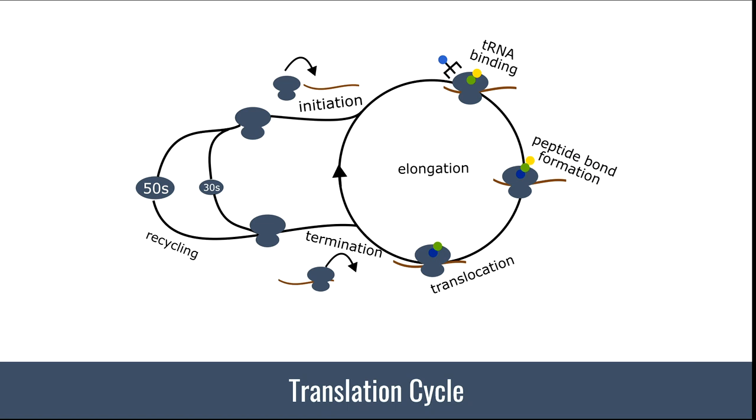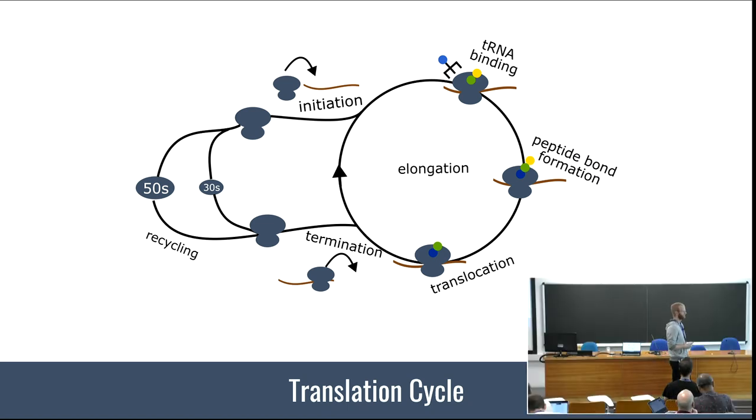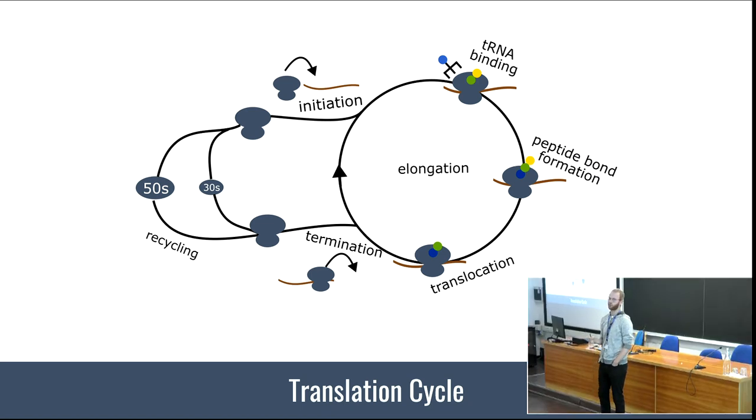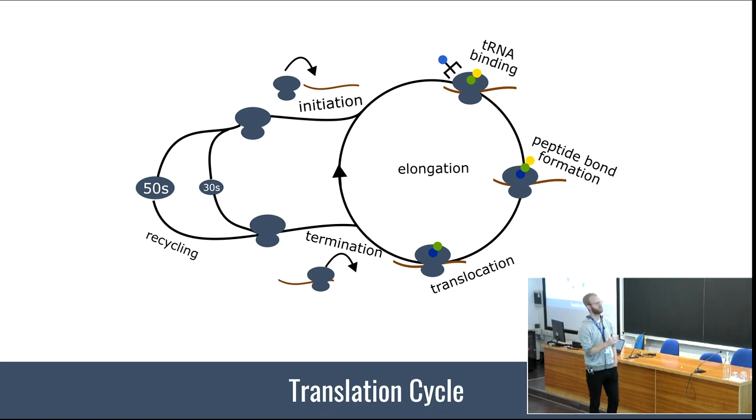Let's start from the translation cycle. Most of us are familiar, but you have the initiation of ribosomes on the mRNA, then multiple steps that are often coarse-grained: tRNA binding, peptide bond formation, and translocation. This gets repeated until you reach the stop codon. Typically a lot of talks are about chloramphenicol, but there are actually many more antibiotics that inhibit different steps.